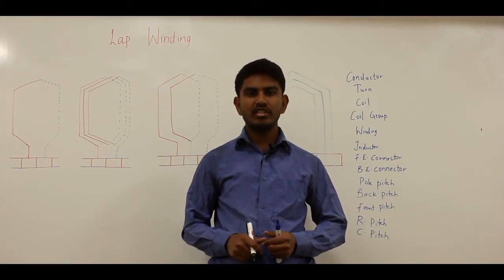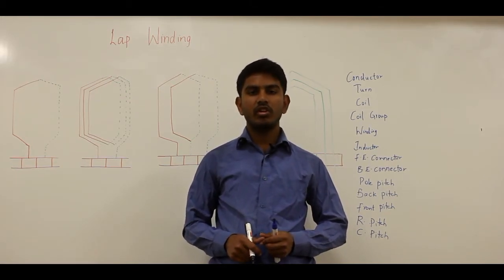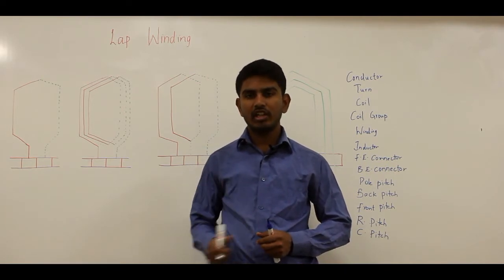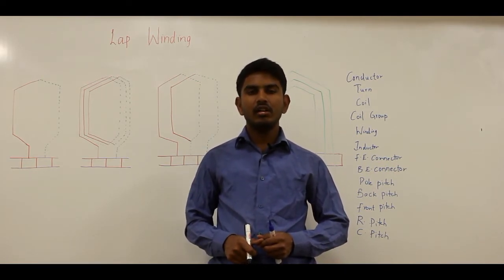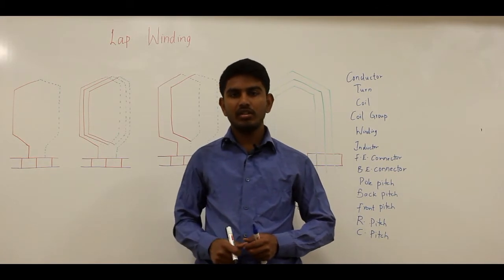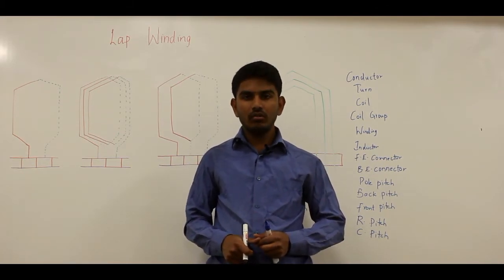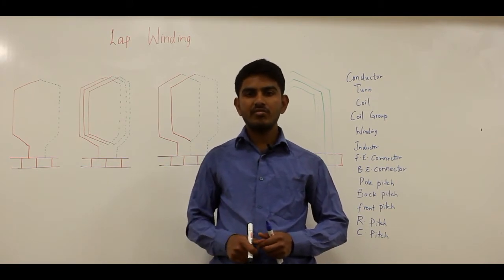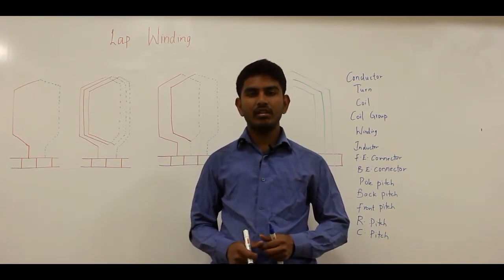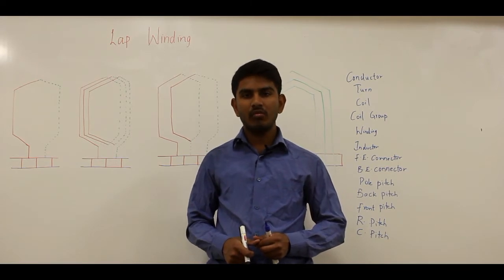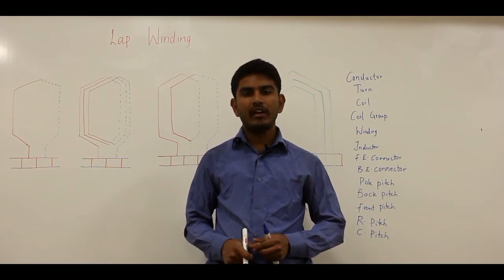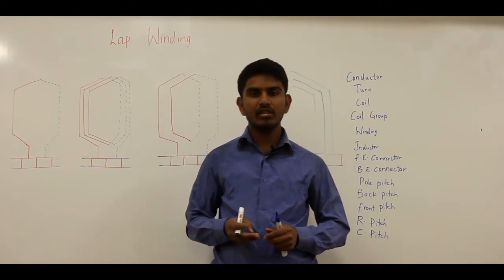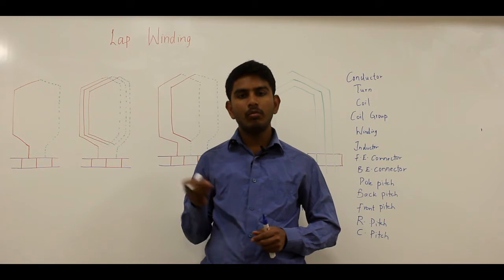In this video let us discuss lap winding. Lap winding is a type of armature winding. Before talking about lap winding in detail, I would like to talk about two basic terms used in armature winding. Armature winding is an arrangement of conductors to develop desired EMF by relative motion in a heteropolar magnetic field. Basically there are two types of machines: a heteropolar machine and a homopolar machine.